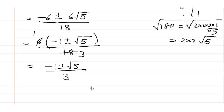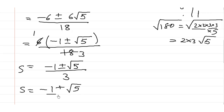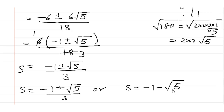So we have two answers: either s = (-1 + √5) / 3, or s = (-1 - √5) / 3. Hope you understood this. Thanks for watching.